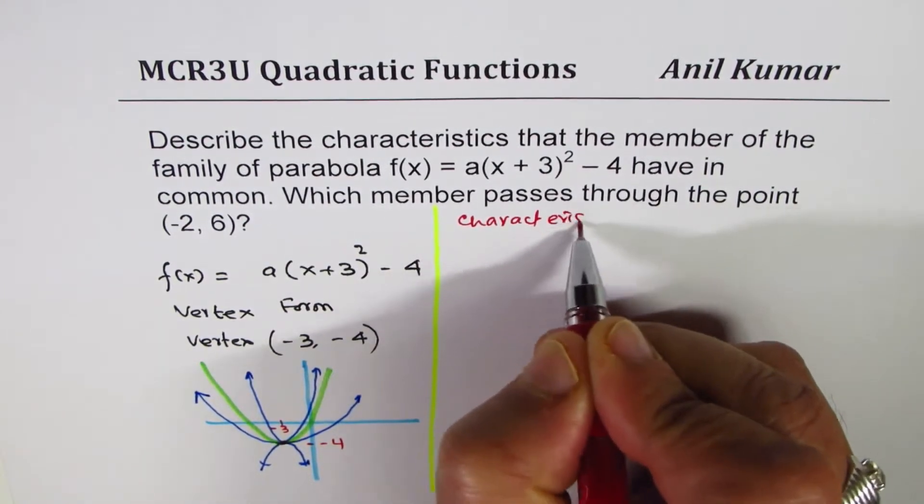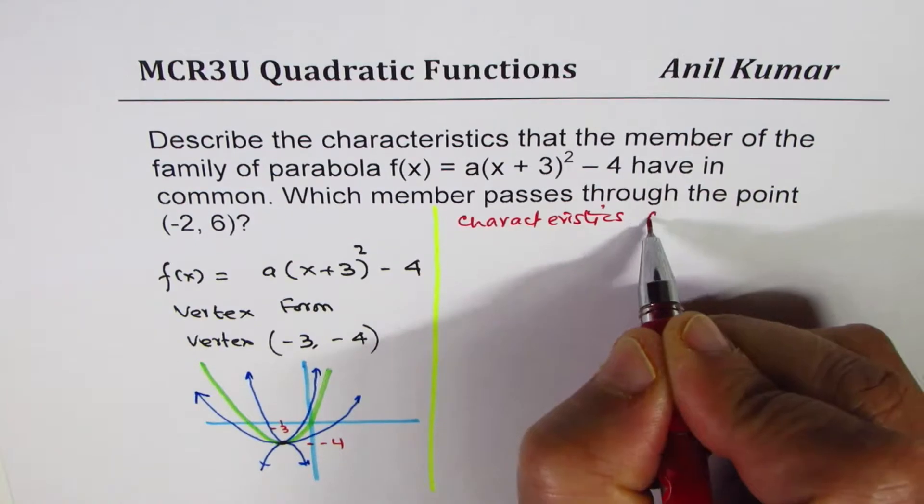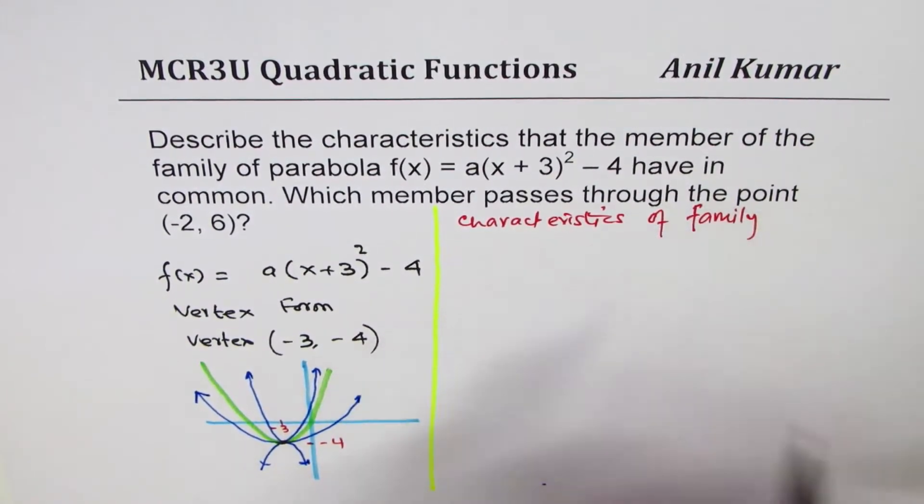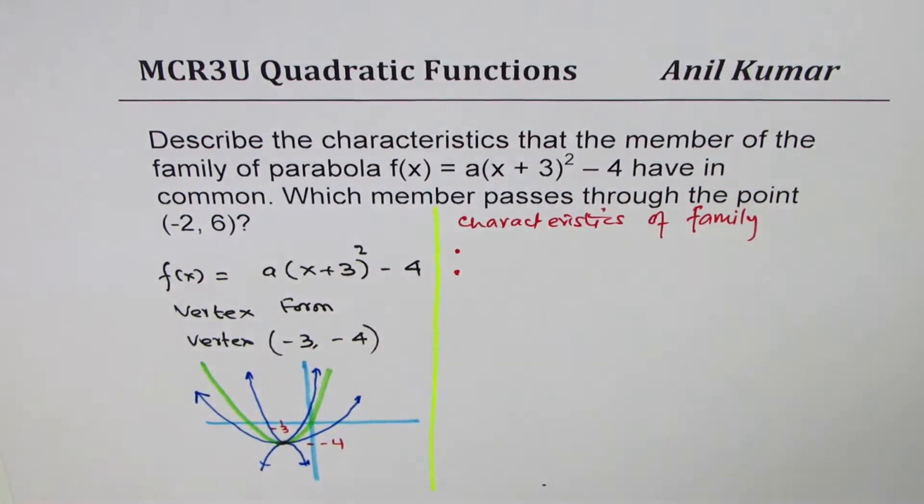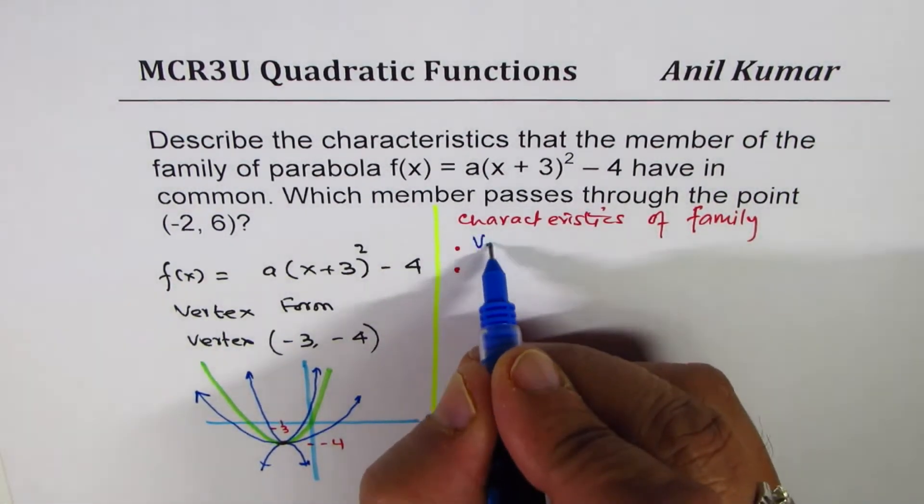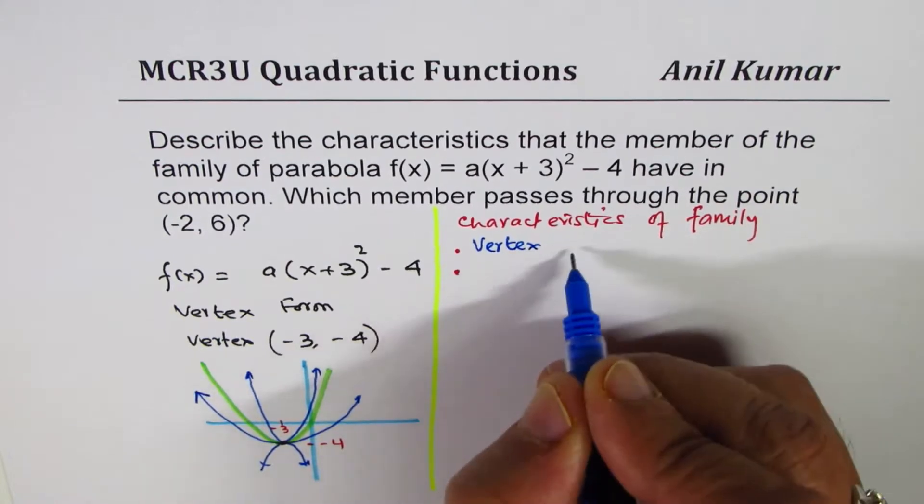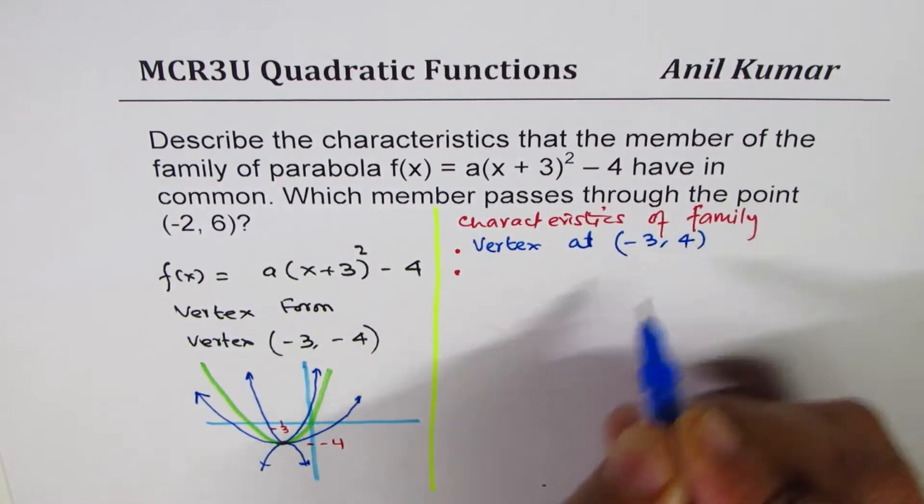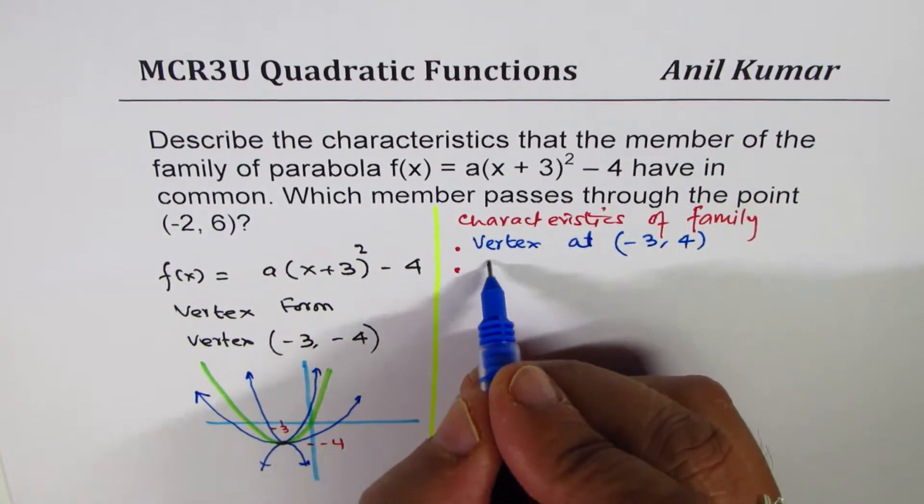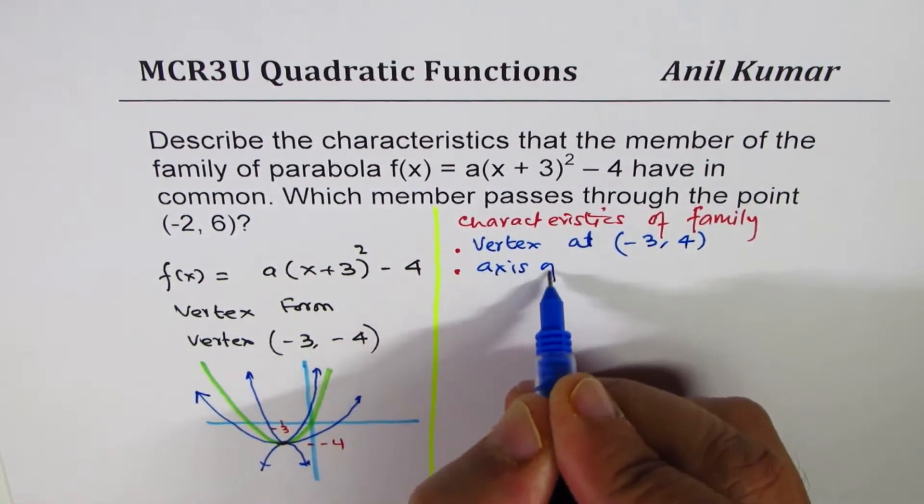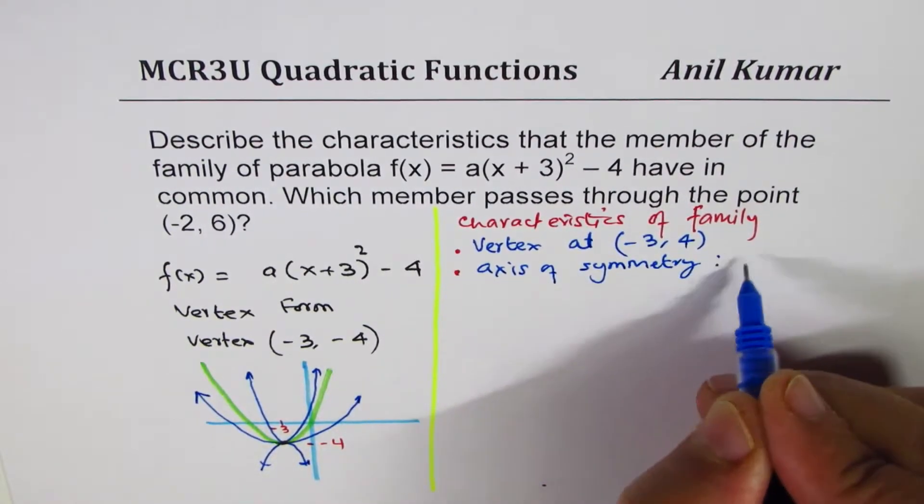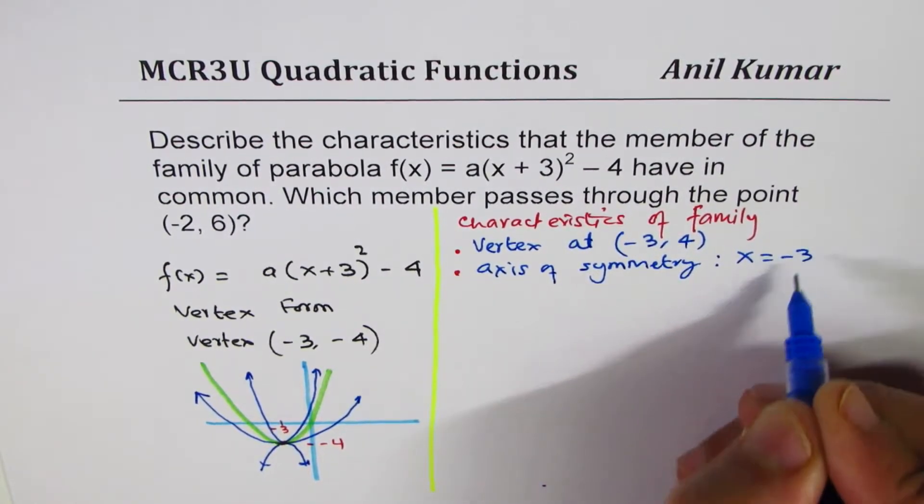So characteristics of family will be, there are basically two. The first one is that vertex at (-3, -4), and the second one is axis of symmetry is x = -3.